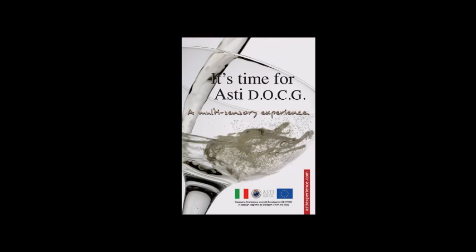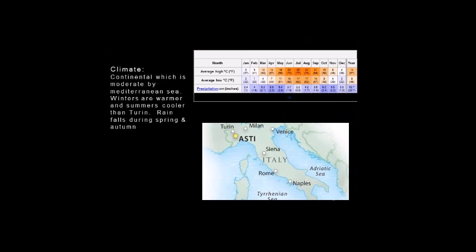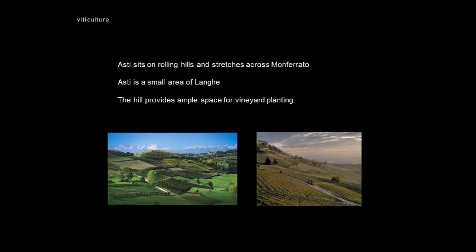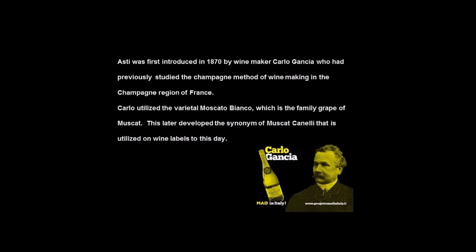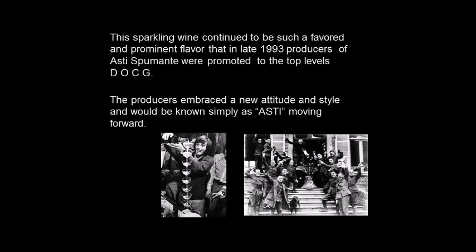Varietals of Loire Valley: Sauvignon Blanc, Chenin Blanc, Melon de Bourgogne, Muscadet, and Cab Franc. For Nantes: Muscadet, Sèvre et Maine. For Anjou-Saumur: Savennières from Chenin Blanc. For Touraine: Vouvray — Chenin Blanc of good quality — and Cab Franc. For Central Vineyards: Sancerre with Sauvignon Blanc and Pinot Noir; Pouilly-Fumé with Sauvignon Blanc.